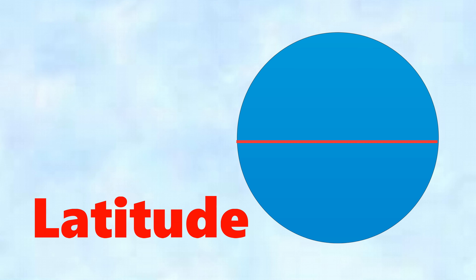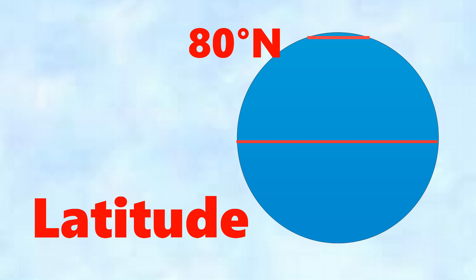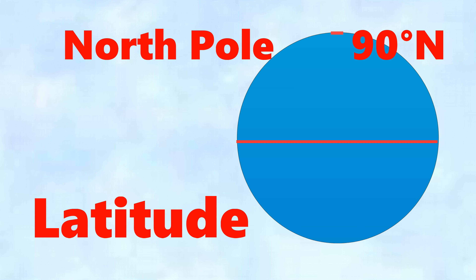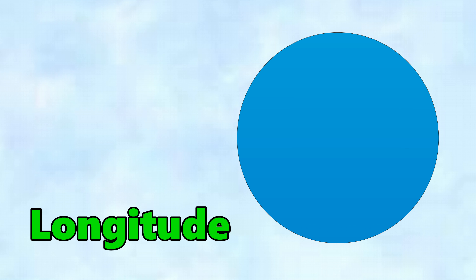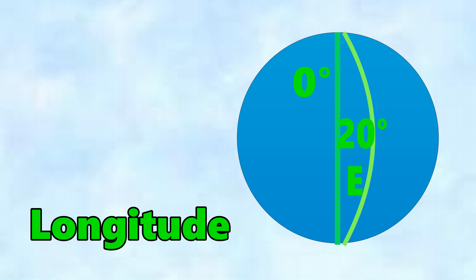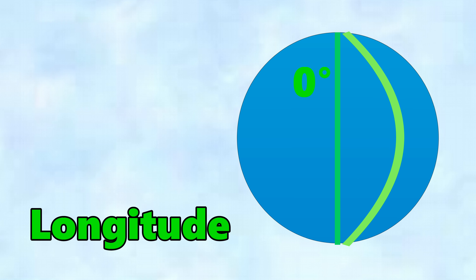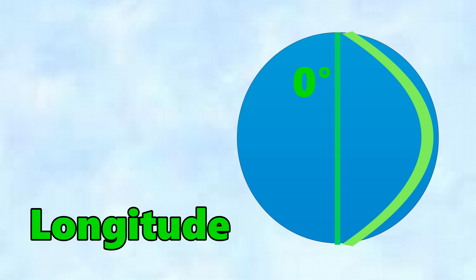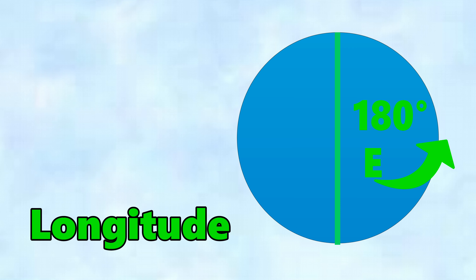Looking at latitude in greater detail: we can draw parallels to the equator. One would be 20 degrees north, another 45 degrees north, then 70 degrees north, then 80 degrees north, and right at the very top is the north pole at 90 degrees north. For longitude, starting from the prime meridian through Greenwich, heading east we have 20 degrees, 45 degrees, 80 degrees east, and all the way around to 180 degrees.